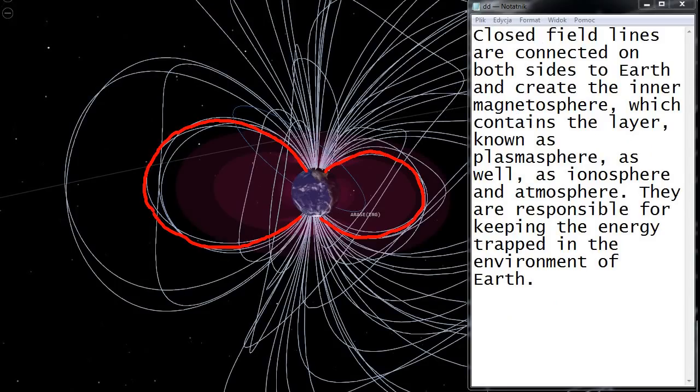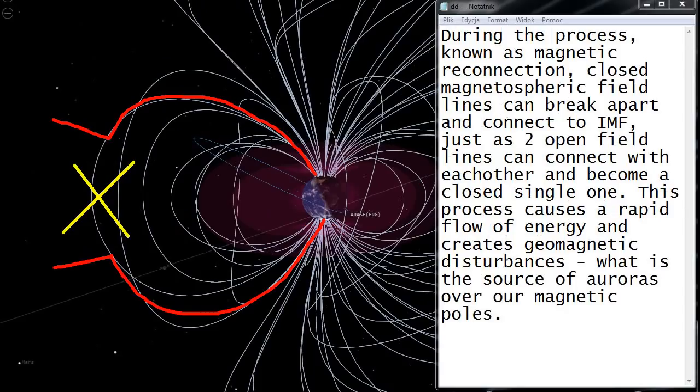Closed field lines are connected on both sides to Earth and create the inner magnetosphere which contains the layer known as plasmosphere as well as ionosphere and atmosphere. They are responsible for keeping the energy trapped in the environment of Earth. During the process known as magnetic reconnection, closed magnetospheric field lines can break apart and connect to IMF, just as two open field lines can connect with each other and become a closed single one. This process causes a rapid flow of energy and creates geomagnetic disturbances. What is the source of auroras over our magnetic poles?